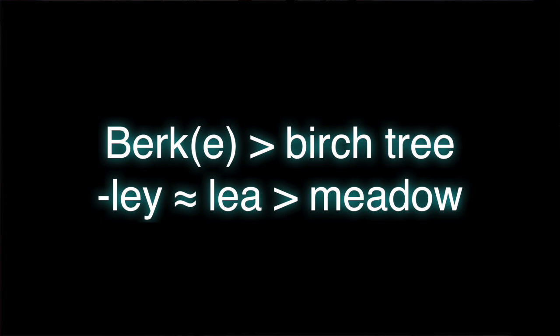We haven't gone over a lot about creating scripts yet, but I at least wanted to talk a little bit about how these spellings come up. If you look at the etymology of Berkeley, the 'Burk' part comes from birch, and the 'ley' part comes from meadow or something. So it's like Field of Birch Trees or Birch Tree Meadow — that's what Berkeley ultimately means.